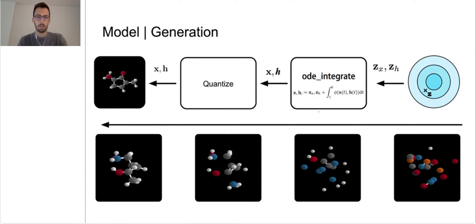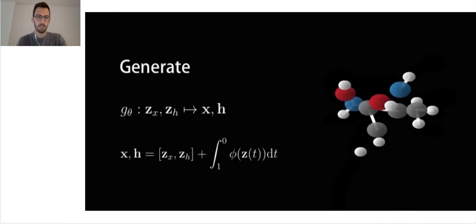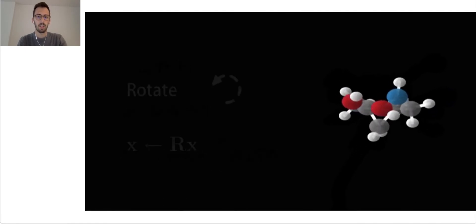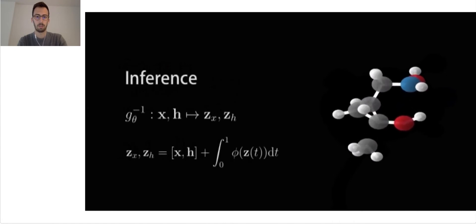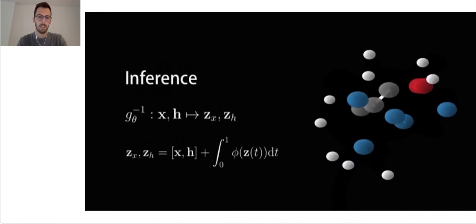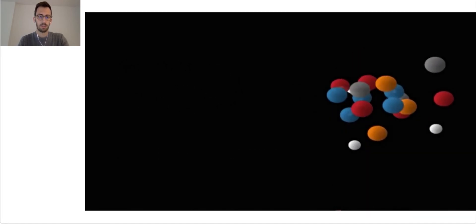First, we sample random coordinates and features from a noise distribution. Then we generate a molecule from it, and if we rotate it to a different orientation and then do inference back to the original noise, we get back the firstly sampled noise distribution in a different orientation.